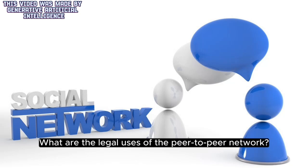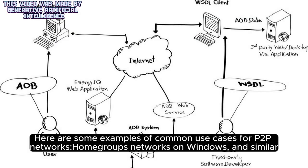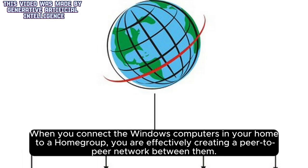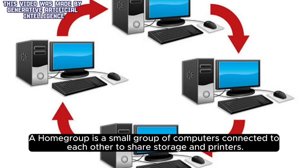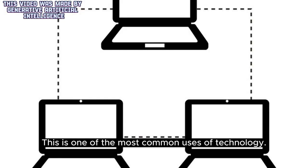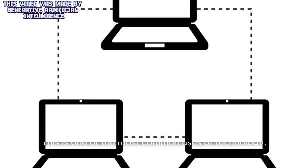What are the legal uses of the peer-to-peer network? Here are some examples of common use cases for P2P networks. Home group networks on Windows and similar: when you connect Windows computers in your home to a home group, you are effectively creating a peer-to-peer network between them. A home group is a small group of computers connected to each other to share storage and printers. This is one of the most common uses of peer-to-peer technology.